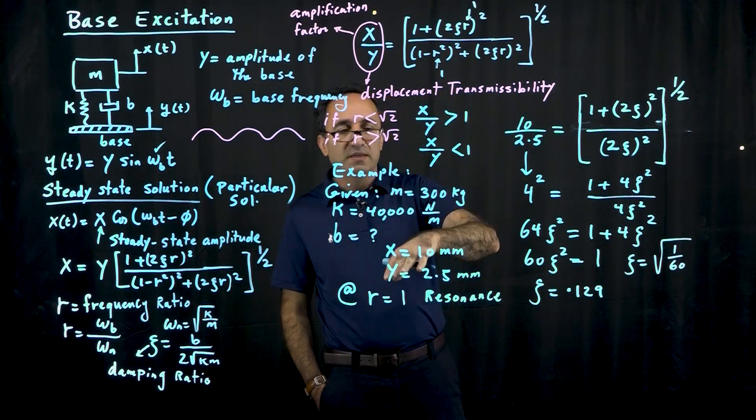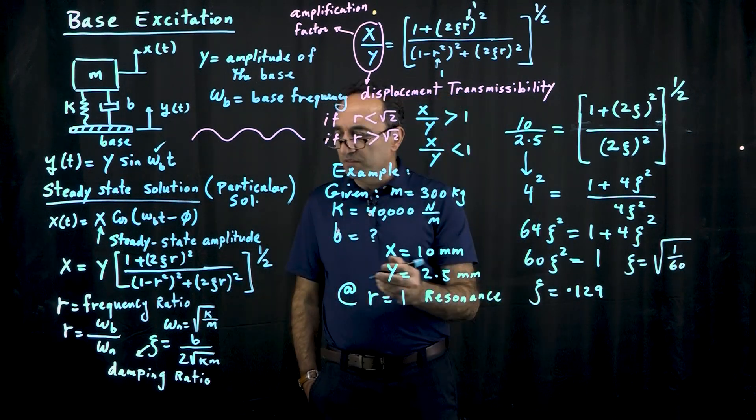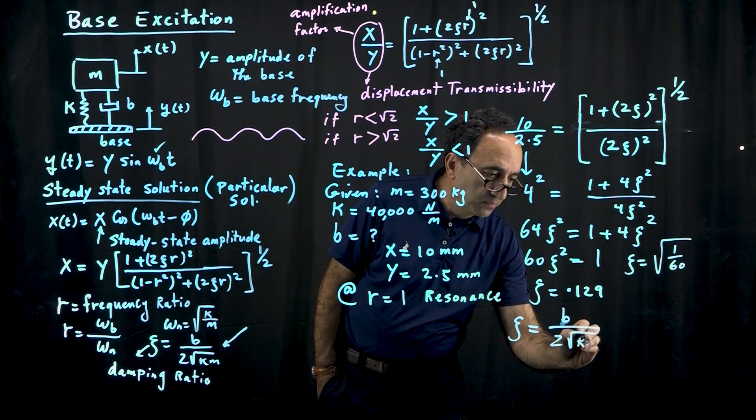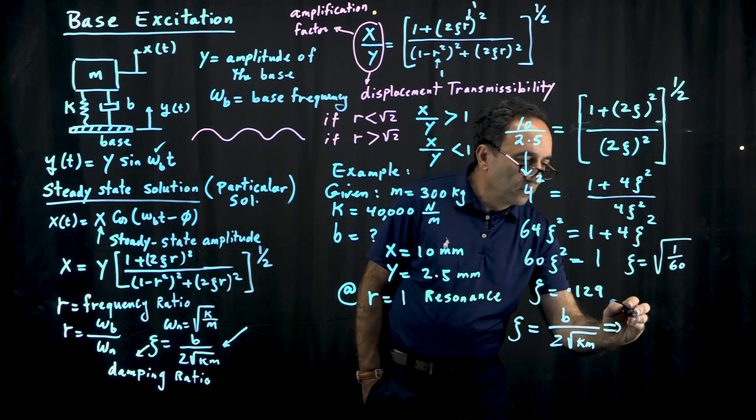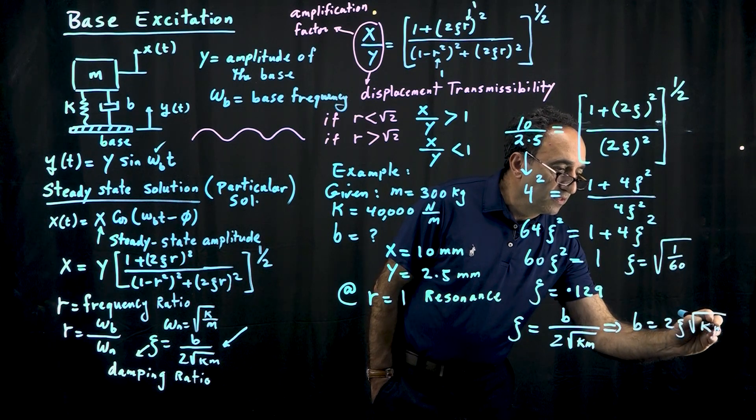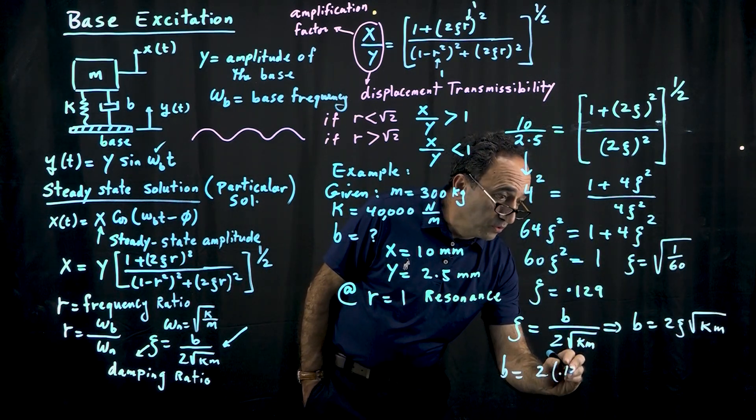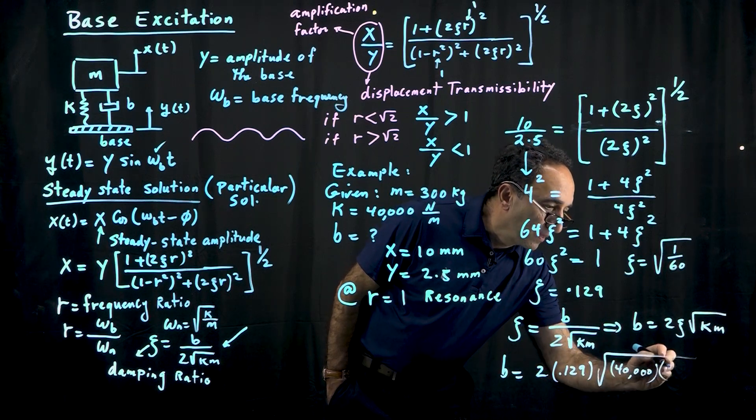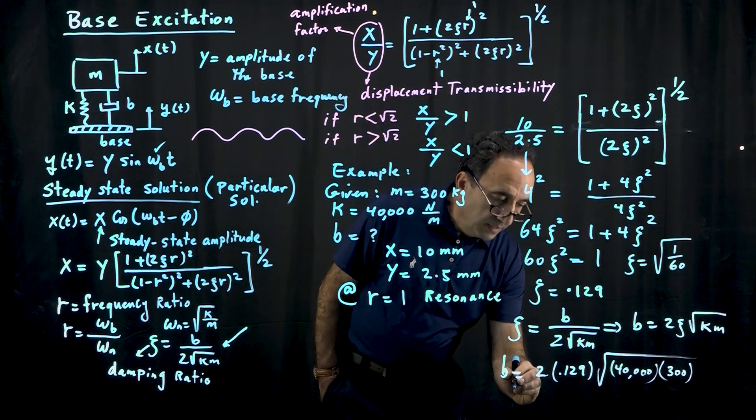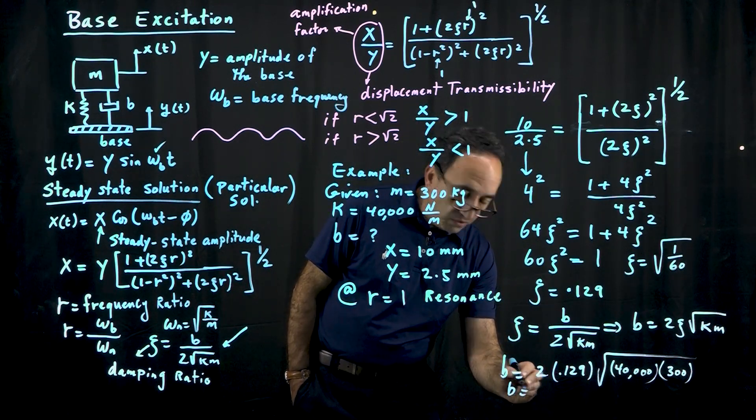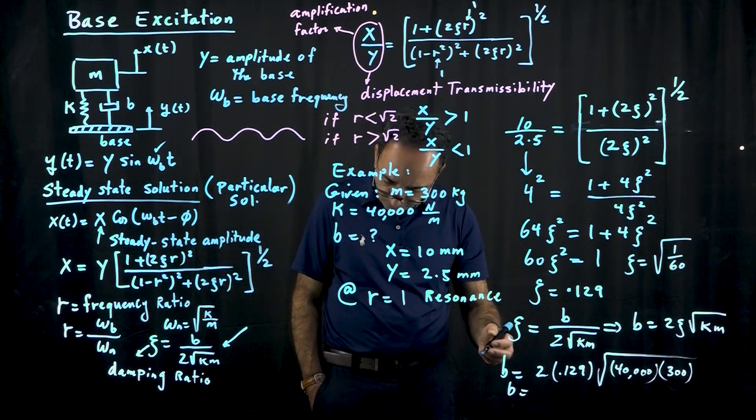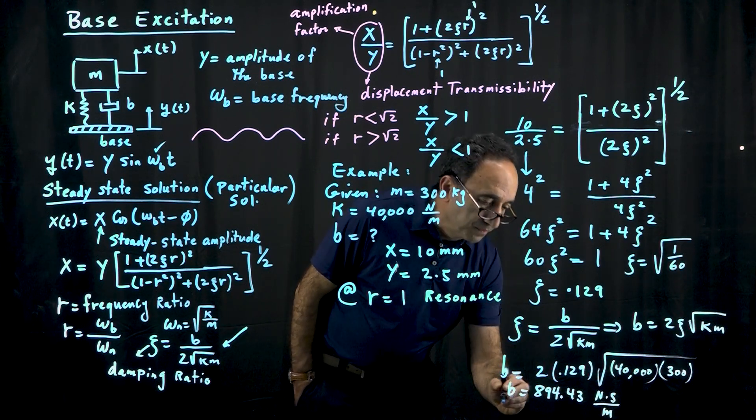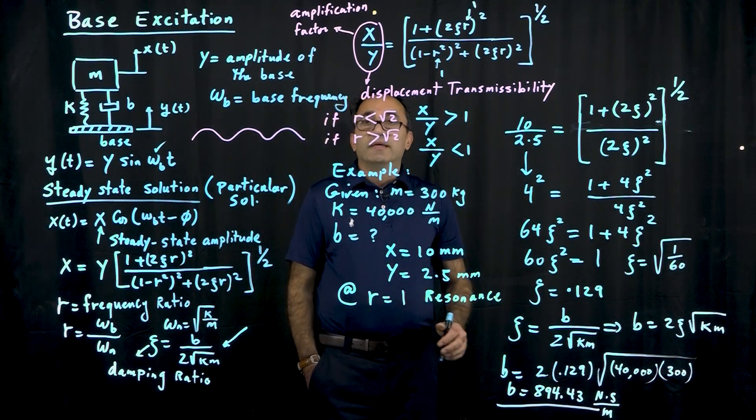So now you guys know that zeta, back here in this equation, is equal to b divided by 2 square root of km. So we can go ahead and solve for b. b becomes 2 zeta, square root of km. So therefore, 2 times 0.129, right? Square root of k is 40,000. And m is 300, as given in the problem. And if we solve for b, b comes out to be, and that's the damping coefficient, about 894.43, with the unit of Newton seconds per meter. So that's the answer for the damping coefficient.